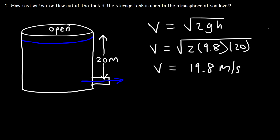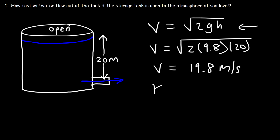You can get the same equation using conservation of energy. As the fluid descends, the gravitational potential energy is decreasing, and that gravitational potential energy is being converted to kinetic energy as the fluid shoots out of the tank. So in this example, we could set kinetic energy equal to potential energy: 1/2 mv² is equal to mgh.